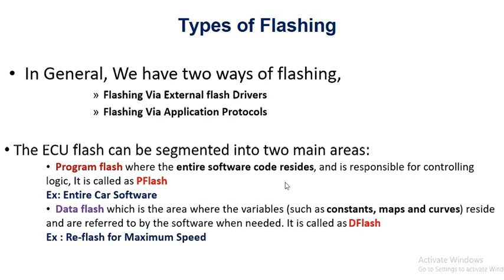P flash is used whenever you are trying to flash the entire code. If you want to flash the entire software into the ECU, or even program the entire car, that is only possible through program flash. You cannot do it with application protocols because when sending bulk code, there is a chance of data corruption, checksum problems, or CRC issues. With program flash, bulk or entire core software can be flashed without any problem, provided the software is correct.